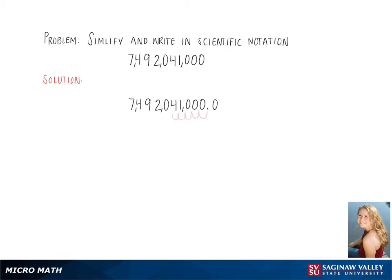Then we start by moving the decimal place over to make our first number between 1 and 10, which in our case would be 7.492041.